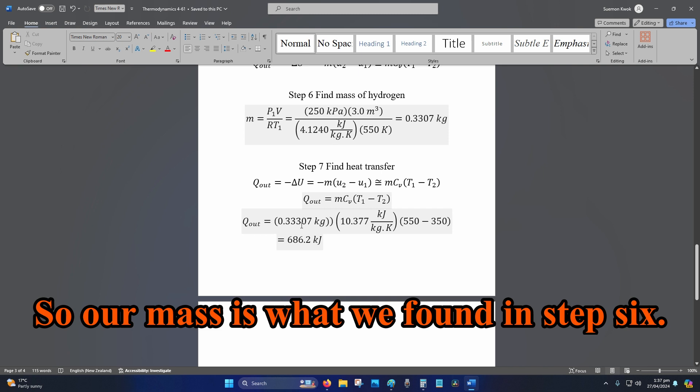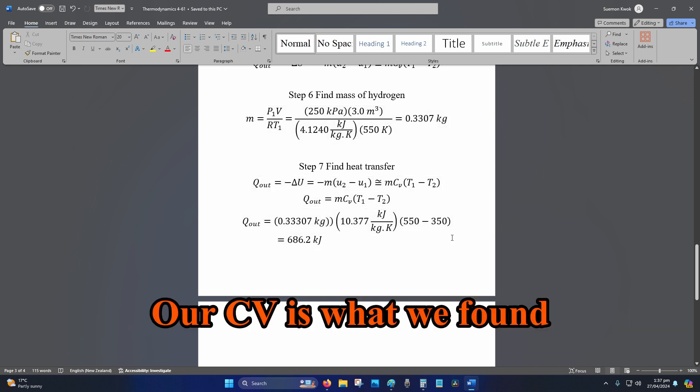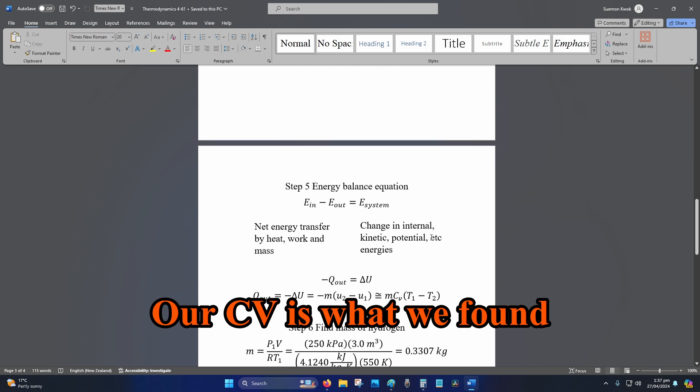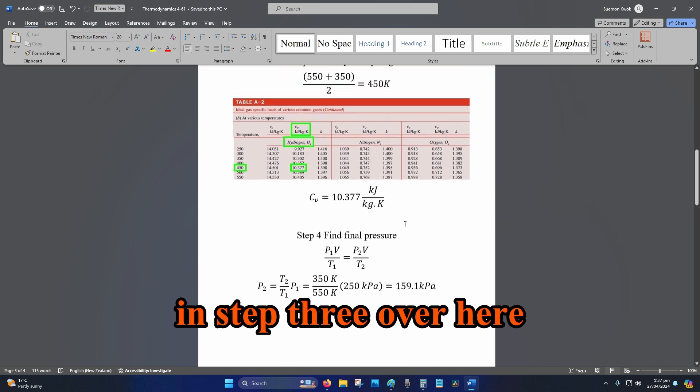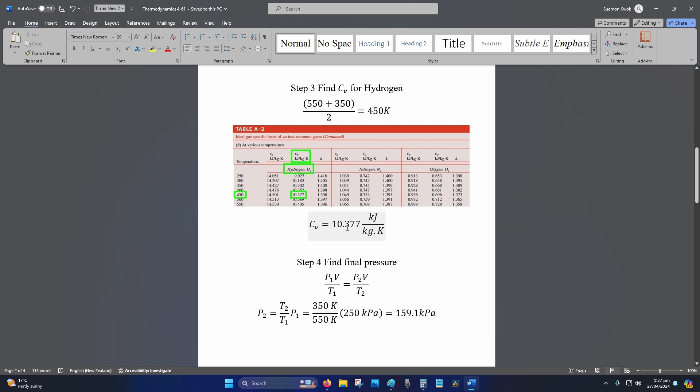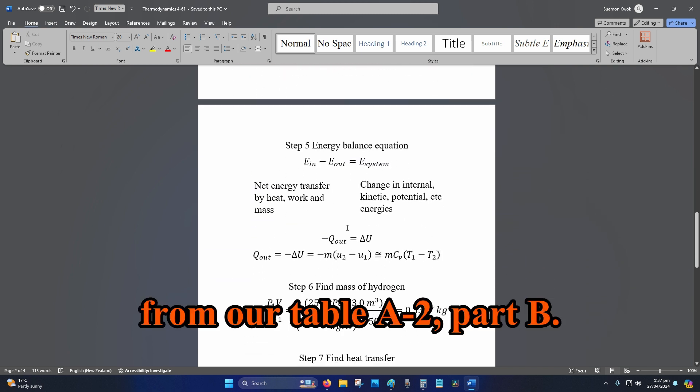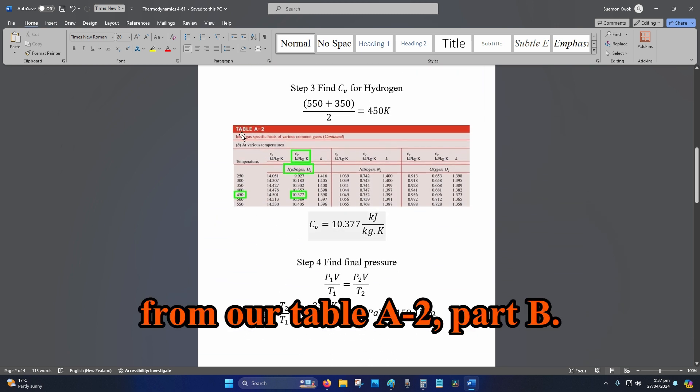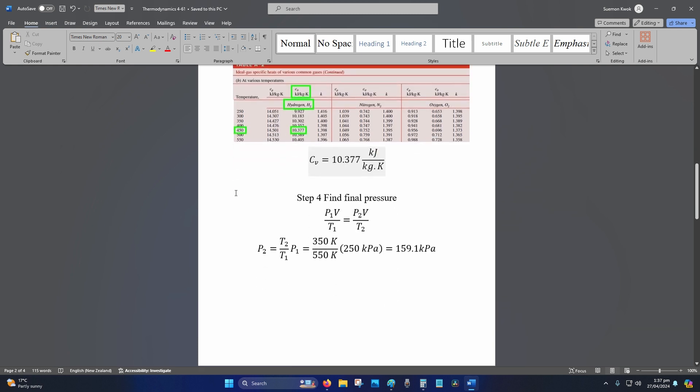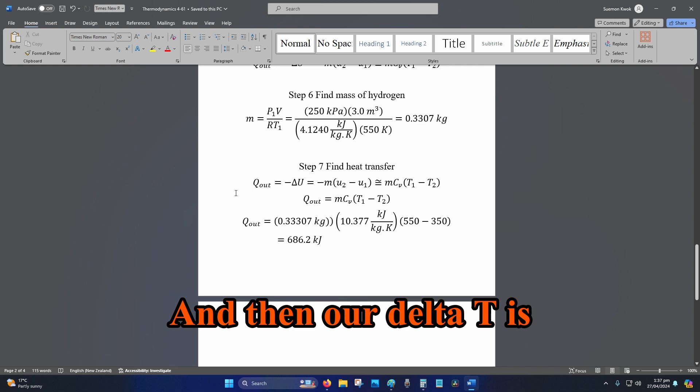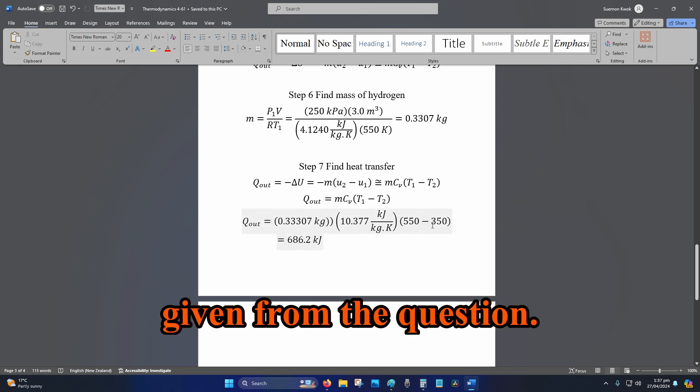Our mass is what we found in step 6. Our CV is what we found in step 3, from our table A-2, part B. Our delta T is given from the question, our initial temperature and our final temperature.